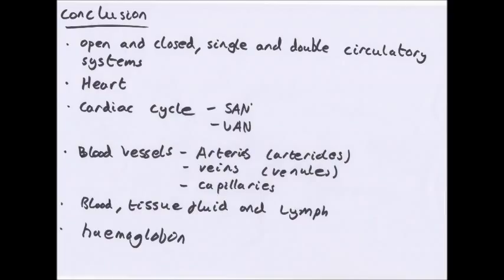In conclusion: circulatory systems can be open or closed, and single or double. The main part of the circulatory system is the heart, which operates through the cardiac cycle — atrial systole, ventricular systole, and diastole — controlled by the SAN and AVN. Blood is carried in arteries, veins, and capillaries. Tissue fluid surrounds cells outside the blood vessels, and lymph is in the lymphatic system. Haemoglobin in red blood cells is responsible for oxygen transport.